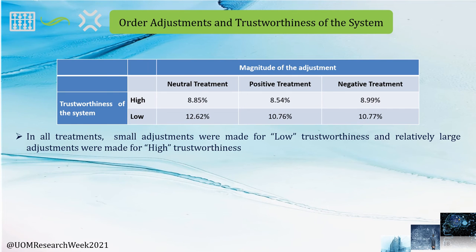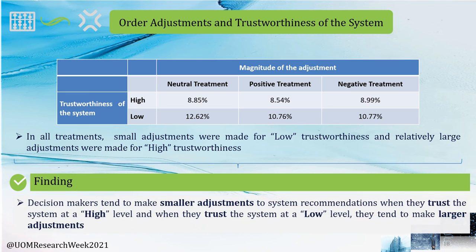We extended our analysis by combining the trustworthiness of the system with the magnitude of the adjustments. Our research reveals that decision makers tend to make small adjustments to system recommendations when they trust the system at a high level. On the other hand, when they trust the system at a low level, they tend to make large adjustments.